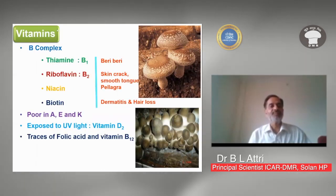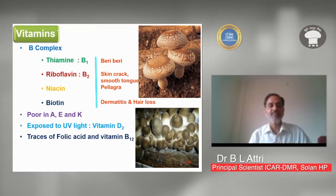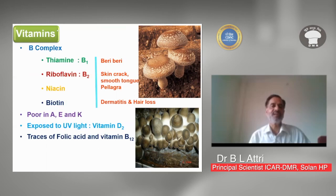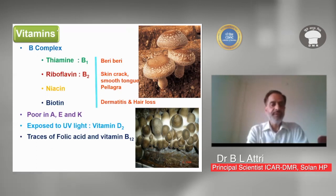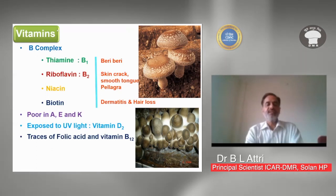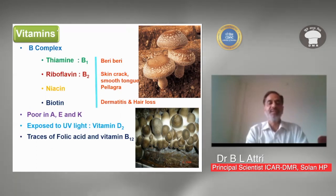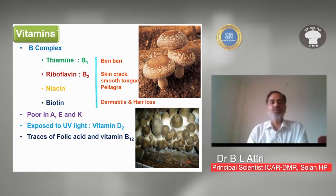Mushrooms contain B-complex vitamins in good quantity — B1, B2, niacin, and biotin — which help check diseases such as skin cracks, smooth tongue, pellagra, dermatitis, and hair loss. Taking mushrooms regularly provides a very good quantity of vitamins. They are poor in vitamins A, E, and K — vitamin A is prevalent in colored and green vegetables, and vitamin E is found in high-fat foods. However, when mushrooms are exposed to UV light, their vitamin D content increases substantially. Traces of folic acid and vitamin B12 are also available in mushrooms.